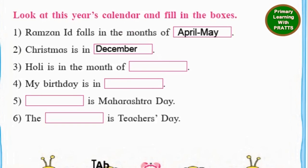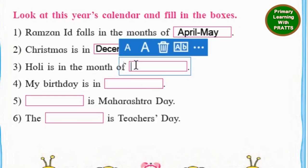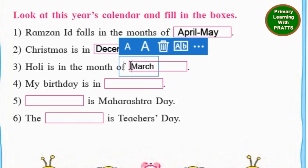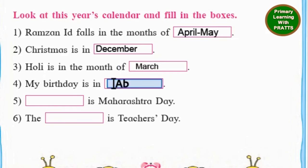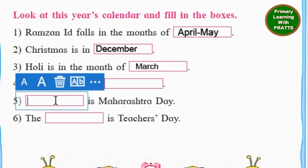Holi is in the month of March. Holi always comes in the month of March, so we will write March. Next, my birthday is in - you will write the month of your birthday, because they are not saying 'your birthday is on,' they are saying 'is in,' so you write the month. Then blank is Maharashtra Day - we can write the day and the date, so we will write May 1st is Maharashtra Day.